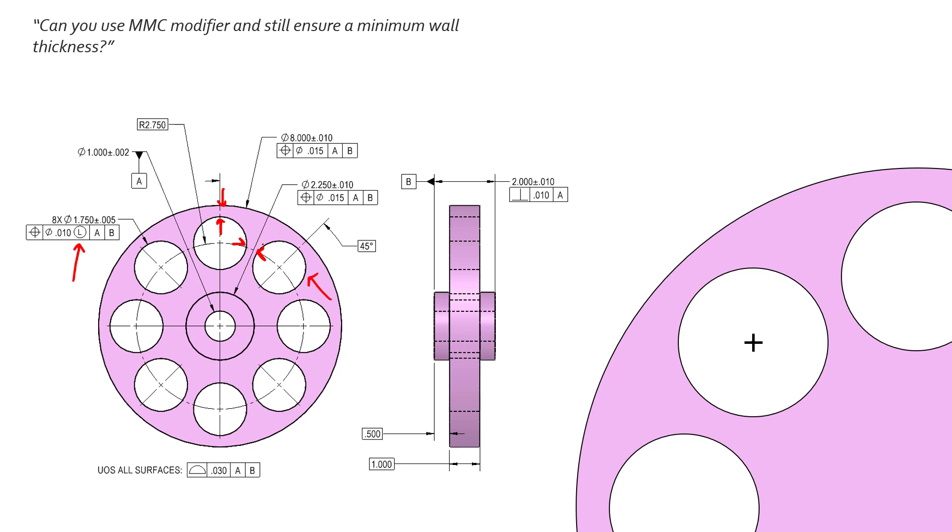Whereas MMC is typically only ever used for assembly features. So if we had something assembling through this like a fastener or a bolt hole, if you're using something like a counterbore hole, definitely throw MMC modifier around there. But the question is: can you use the MMC modifier and still ensure a minimum wall thickness?